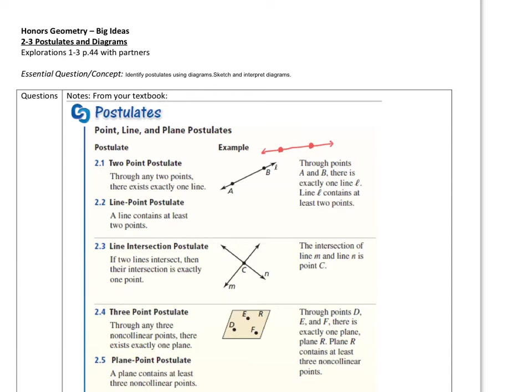The line-point postulate says it's kind of the other way around. If I have a line, now you know that there must be at least two points on the line. That's these two postulates.